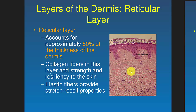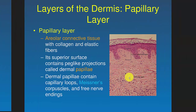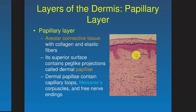The reticular layer has a lot of collagen — collagen is really strong, which is why you can't pull your skin off — and also elastic fibers so that your skin is stretchy. The papillary layer is made of areolar connective tissue and papillae, which are bumps, like the bumps on your tongue or goosebumps. Meissner's corpuscles and free nerve endings stick up in here and allow you to have sensation of the skin.